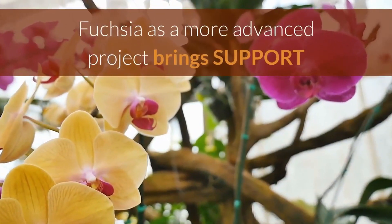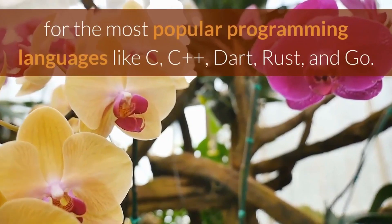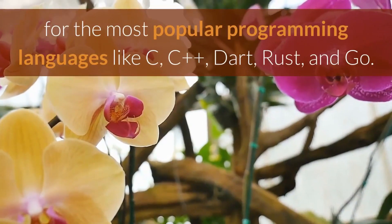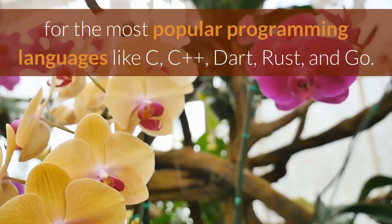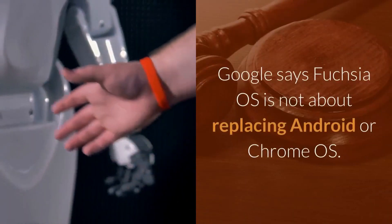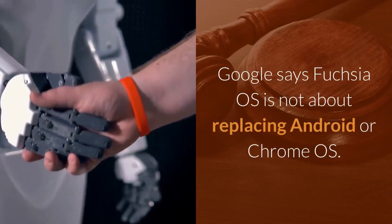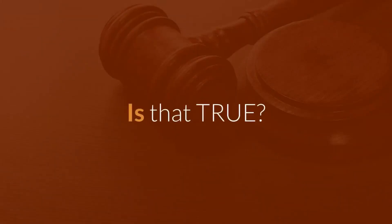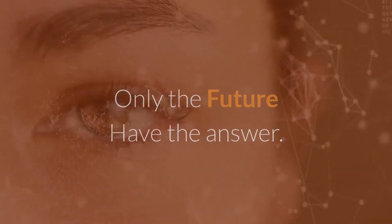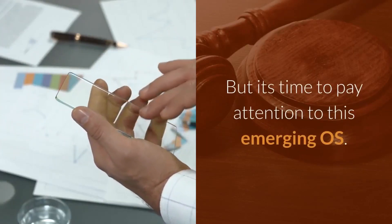Fuchsia, as a more advanced project, brings support for the most popular programming languages like C, C++, Dart, Rust, and Go. Google says Fuchsia OS is not about replacing Android or Chrome OS. Is that true? Who knows — only the future has the answer. But it's time to pay attention to this emerging OS.